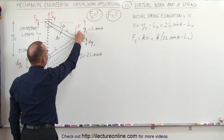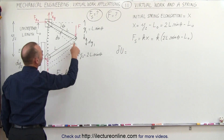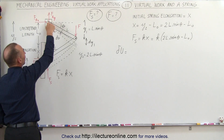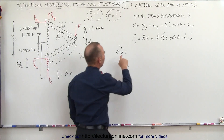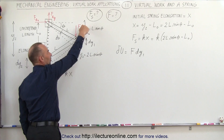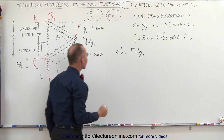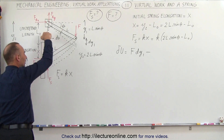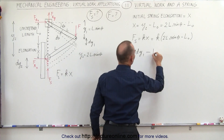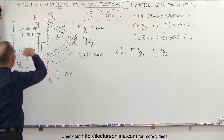Now we apply virtual work to relate the applied force F to the spring force. The only forces doing work are F and the spring force, because the wall reaction is perpendicular to motion and the fixed support doesn't move. The virtual work equation is: F times dy1 (cosine of 0°, which equals 1) minus Fs times dy2 (cosine of 180°, which equals minus 1) equals zero. We need to find dy1 and dy2 in terms of y1 and y2.